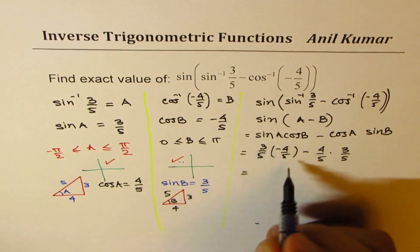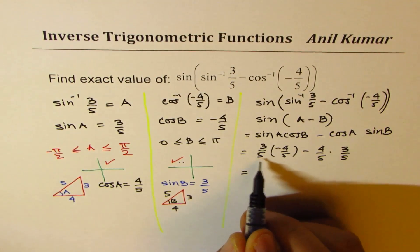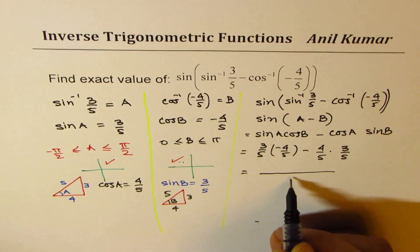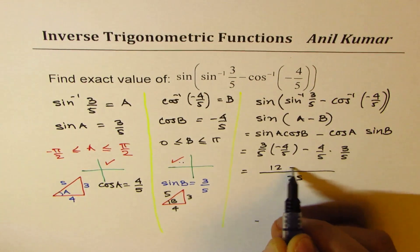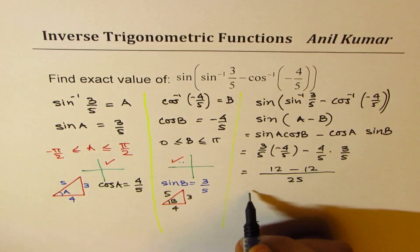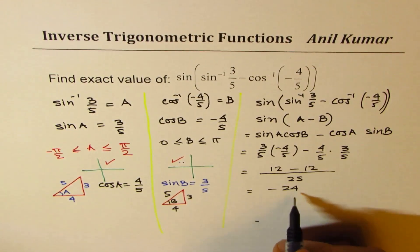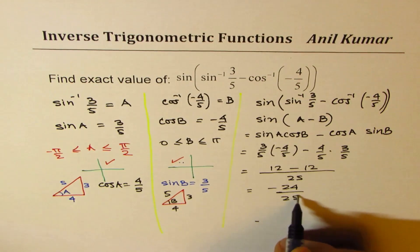Substituting these values and then simplifying, we get the denominator as 25. Let's write common denominator as 25. Minus 12, and this is minus 12. And that gives you minus 24 over 25 as the answer.